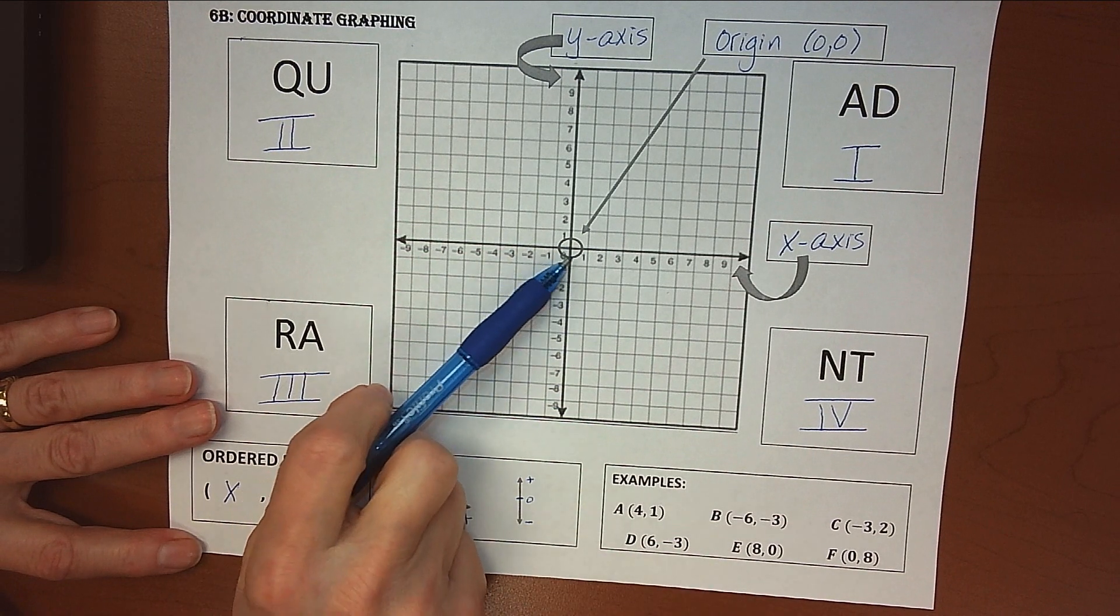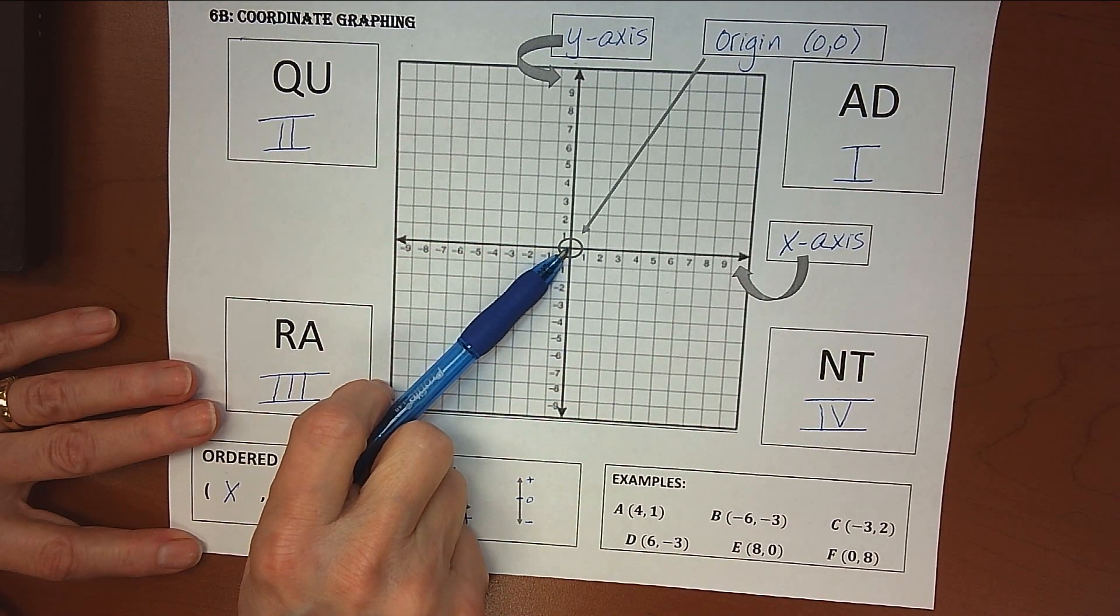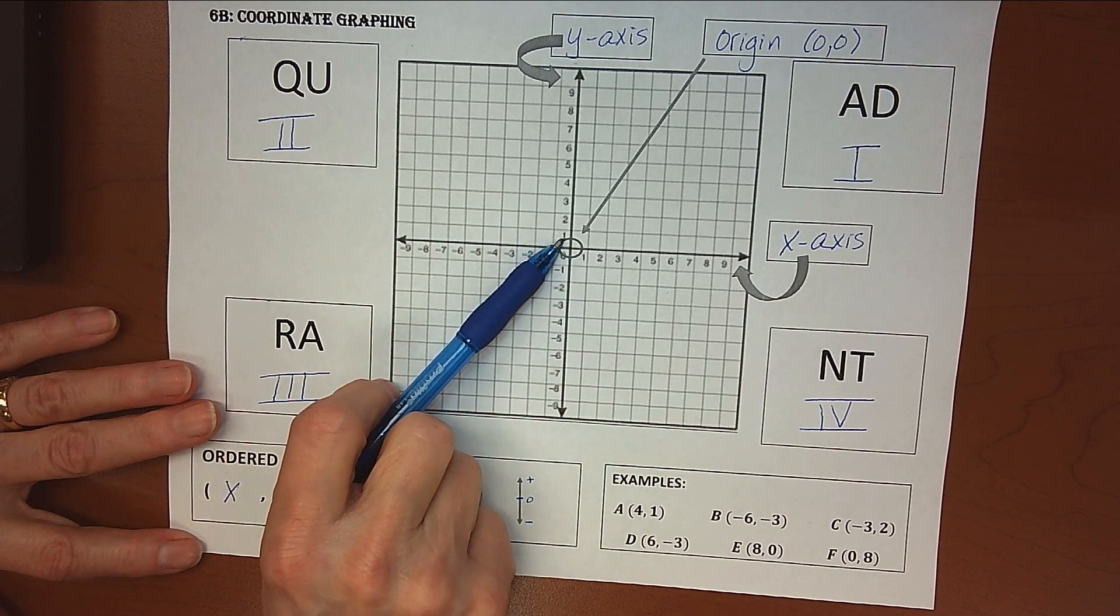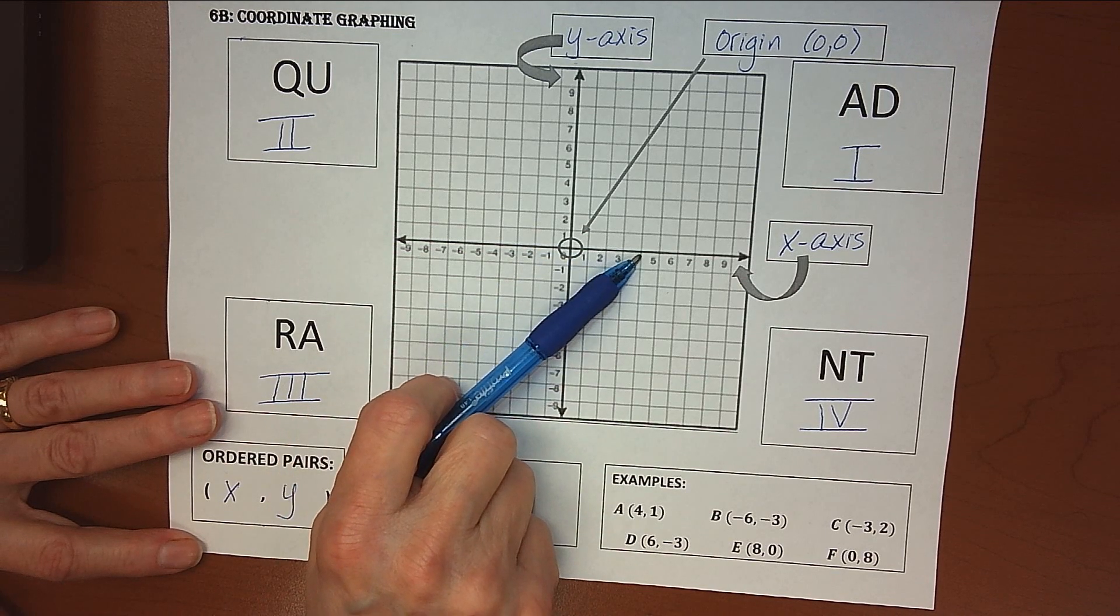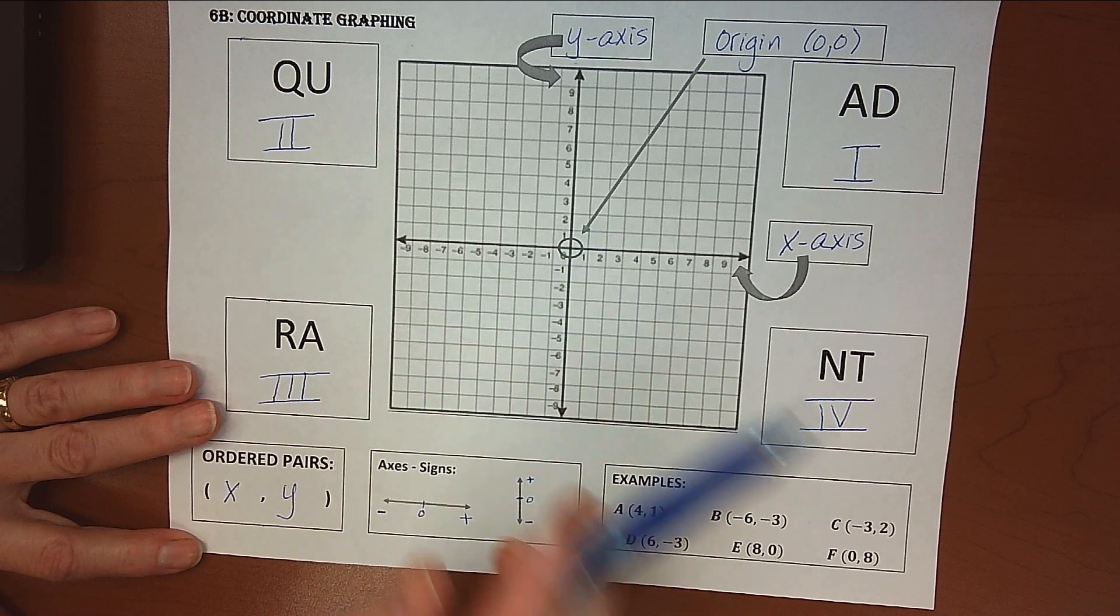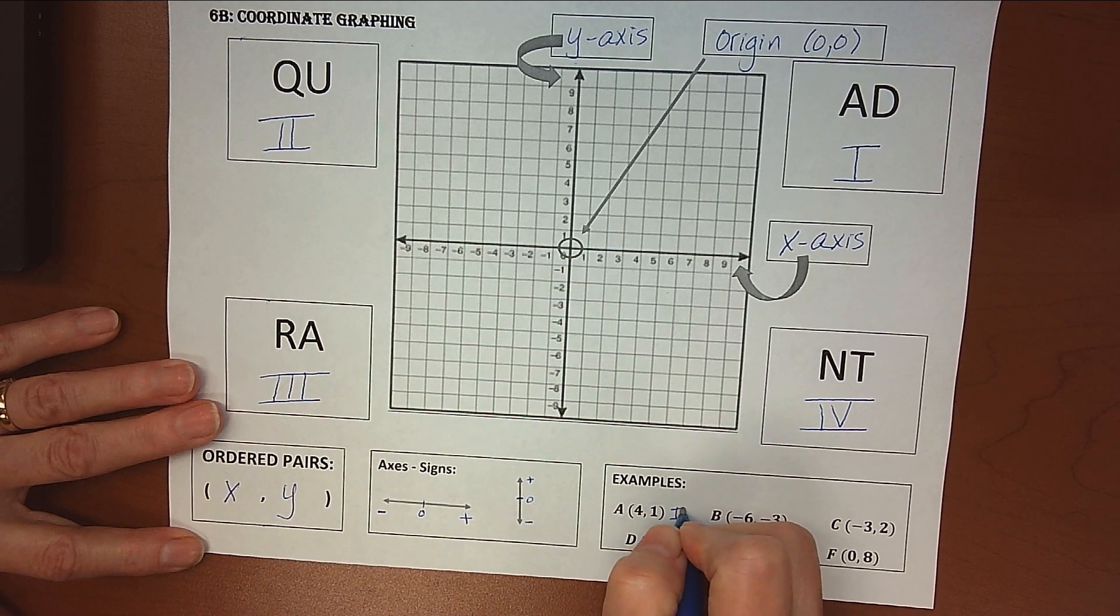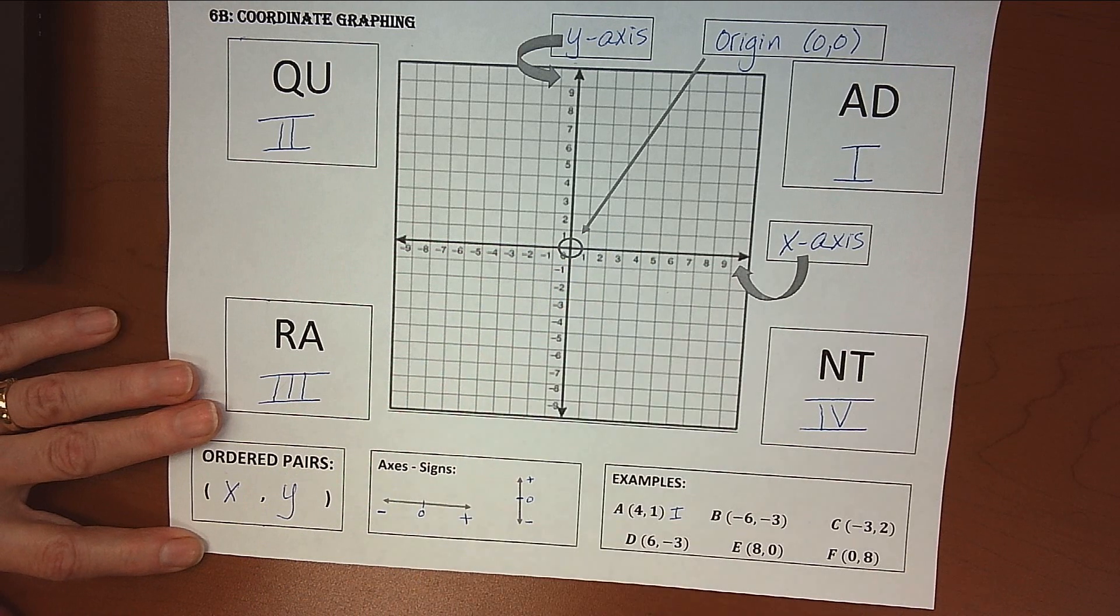So remember we always start at the zero point, and we go right to left first, so this one tells us to go to a positive 4, and then up and down next, and this one says go up 1, and so that one would fall into quadrant I. Over 4, up 1 is in quadrant I.